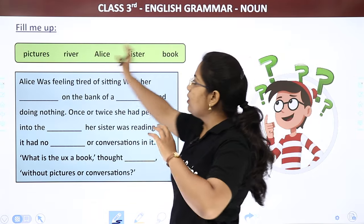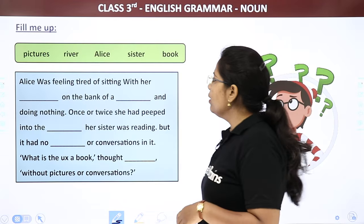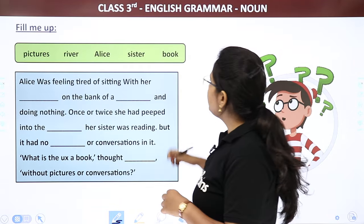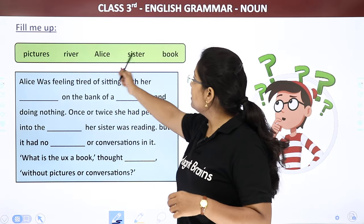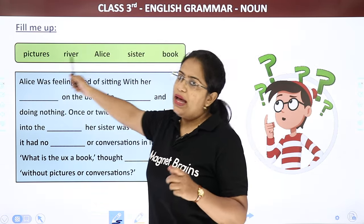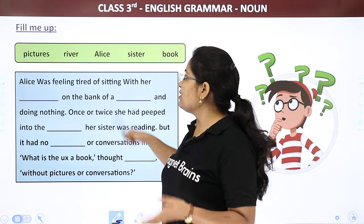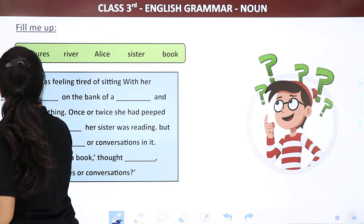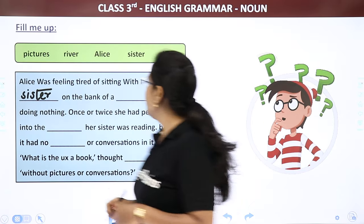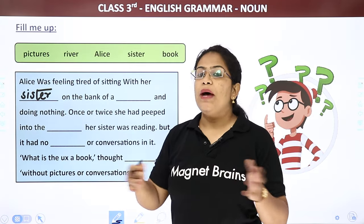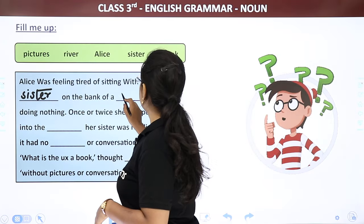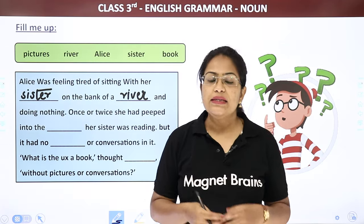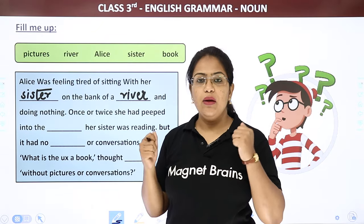Now, you have some nouns in boxes — use them to fill in the blanks. Options are: pictures, river, Alice, sister, and book. First sentence: Alice was feeling tired of sitting with her sister on the bank of a river and doing nothing. Alice was sitting with her sister on the bank of a river, bore ho chuki thi because she had nothing to do.